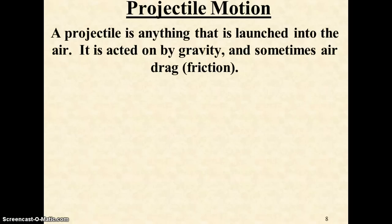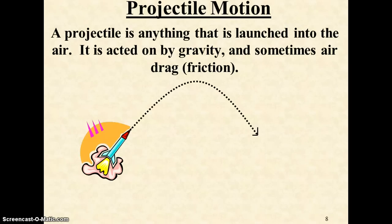For an object launched into the air, if it's only acted upon by gravity—we tend to neglect air resistance most times—it's referred to as a projectile. The path that it takes is referred to as its trajectory. Trajectory is basically a fancy word for the path that an object takes.